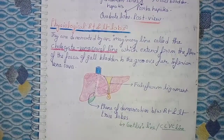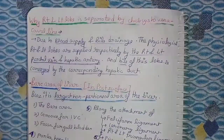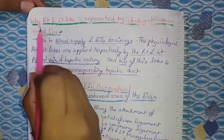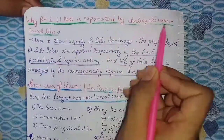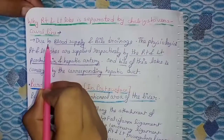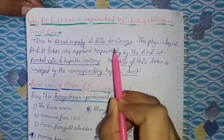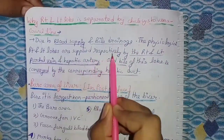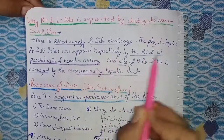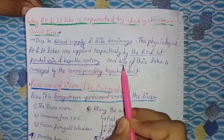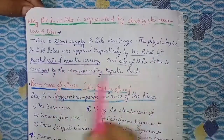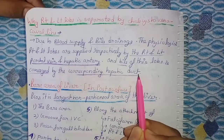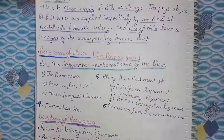This line is also called Cantlie's line or the cholecystocaval line. A most important viva exam question: why are the right and left lobes separated by the cholecystocaval line? The answer is due to blood supply and bile drainage. The physiological right and left lobes are supplied respectively by the right and left portal vein and hepatic artery, and the bile of each lobe is conveyed by the corresponding hepatic duct.